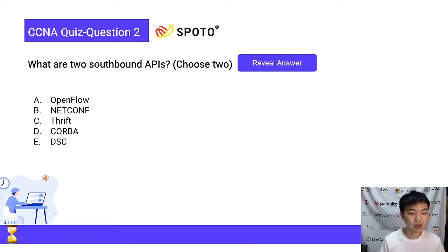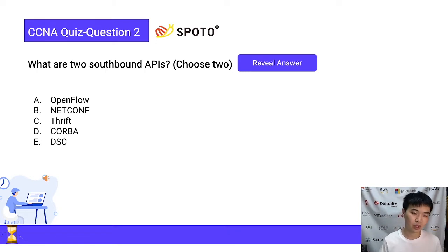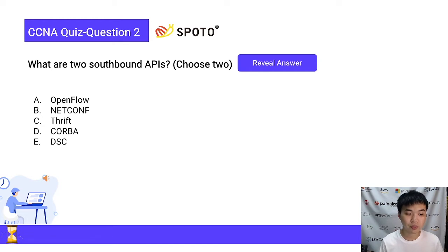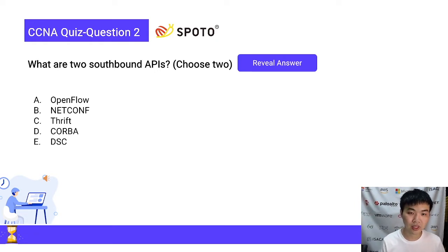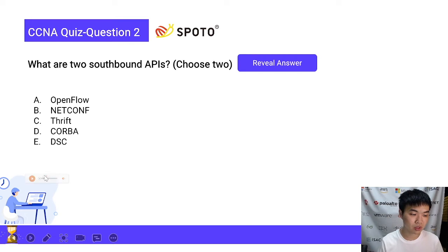The second question: What are two Southbound APIs? Choose two options. A. OpenFlow. B. NetConf. C. Thrift. D. CoreBall. E. DSC. We can choose two. You have 30 seconds to answer it.